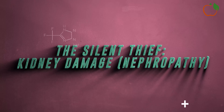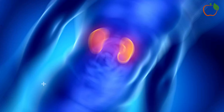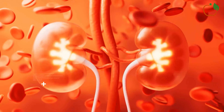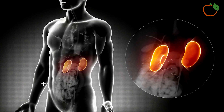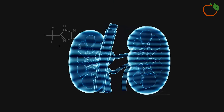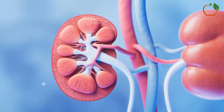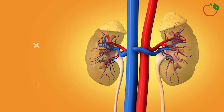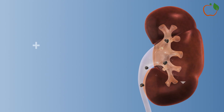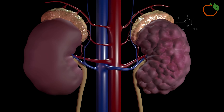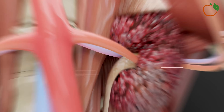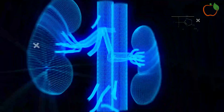The kidneys are another major target of diabetes, with high blood sugar levels gradually damaging these vital organs responsible for filtering waste and excess water from the body. Diabetic nephropathy is a leading cause of end-stage renal disease, ESRD, requiring dialysis or a kidney transplant. Glomerular damage: the glomeruli, tiny filtering units in the kidneys, are particularly vulnerable to high blood sugar. Over time, diabetes can damage these delicate structures, leading to protein leakage into the urine — proteinuria — a hallmark sign of kidney disease. As diabetic nephropathy progresses, the kidneys gradually lose their ability to filter waste products, leading to a buildup of toxins in the body, a condition known as uremia, which can be life-threatening if not treated.